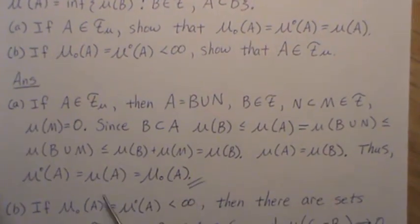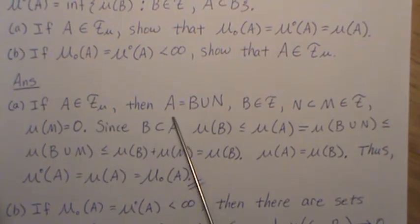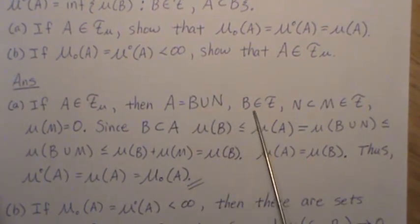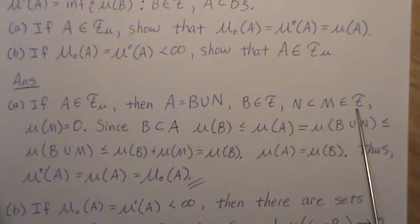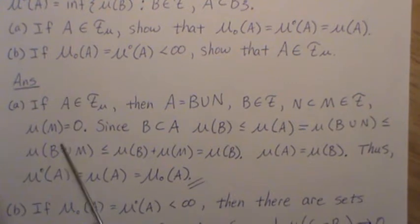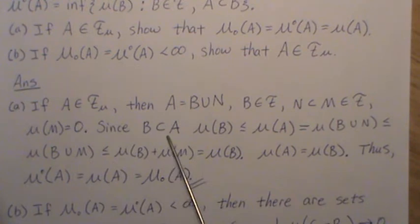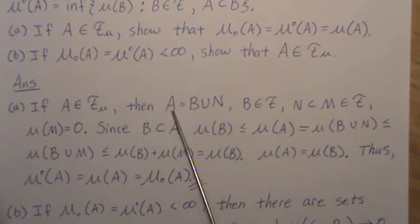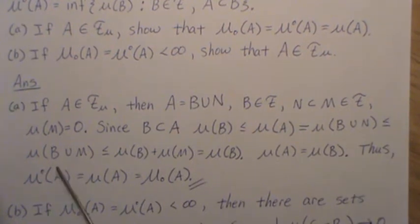So let's look at this. So if A is in f of mu, then we know we can write it as the union of B union N, where B is in the sigma field, and N is a subset of M, which is in the sigma field, and M has measure zero. Since B is a subset of A, we know the measure of B is less than or equal to measure of A. But this is equal to the measure of B union N. We said those are equal.